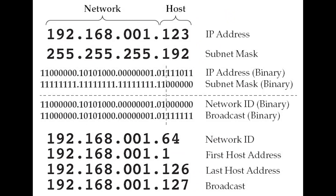Going back to where we drew the line from where the ones end and zeros start, we can derive two different numbers: the network ID and the broadcast ID. You get the network ID by copying all IP address numbers where the subnet mask equals 1, and putting all zeros where it starts with zero. For the broadcast ID, you do the same thing except you put all ones. After that, you convert the binaries back into regular IP address format. Any numbers that fall between the network ID and broadcast ID become the host addresses. A broadcast address is a network address used to transmit to all devices connected to a multiple-access communications network, and a message sent to the broadcast address may be received by all network-attached hosts. The network ID designates a particular subnet to give it an identity on the network.